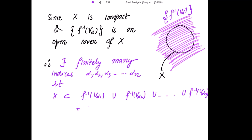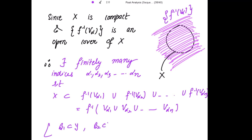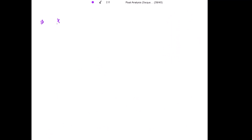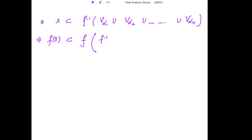This can be rewritten as X ⊆ f⁻¹(V_α₁ ∪ V_α₂ ∪ ... ∪ V_αₙ), using the property that if B₁ and B₂ are subsets of Y, then f⁻¹(B₁ ∪ B₂) = f⁻¹(B₁) ∪ f⁻¹(B₂). From this we can write f(X) ⊆ f(f⁻¹(V_α₁ ∪ V_α₂ ∪ ... ∪ V_αₙ)).